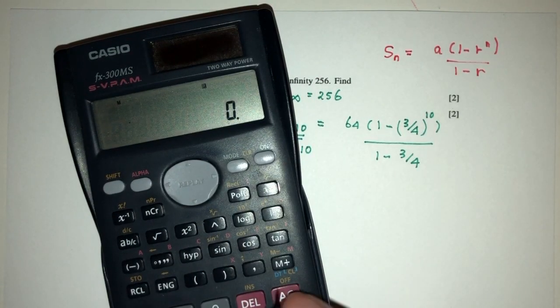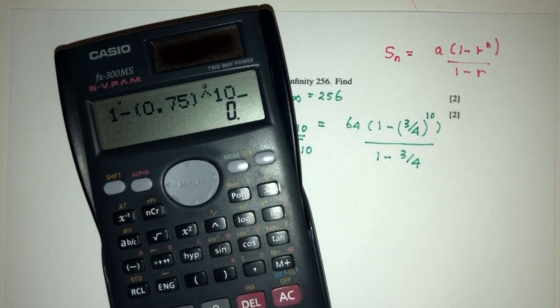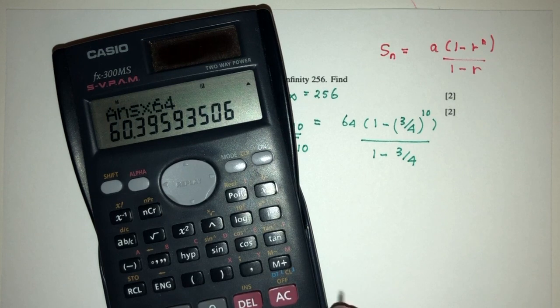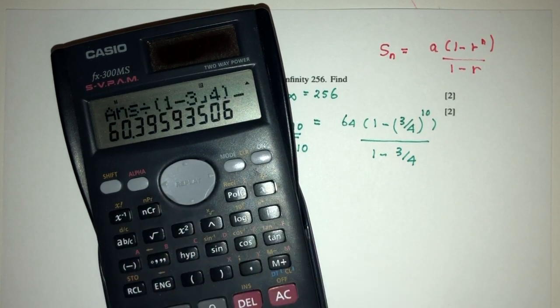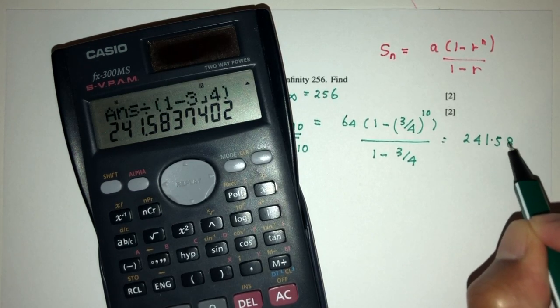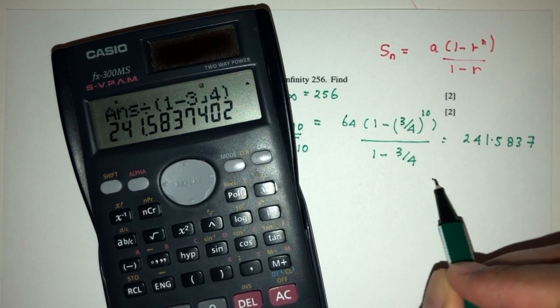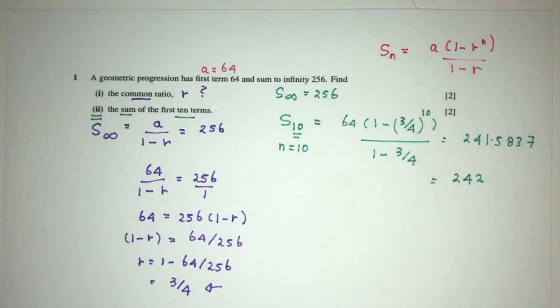Let's see what do we have. So 1 minus 0.75 power 10 times 64 divided by 1 minus 3 quarter, and that should give you what? 2, 4, 1, 5, 8, 3, 7. Now I'll correct to 3 sig figs, obviously that will be 242 as the sum of the first 10 terms.